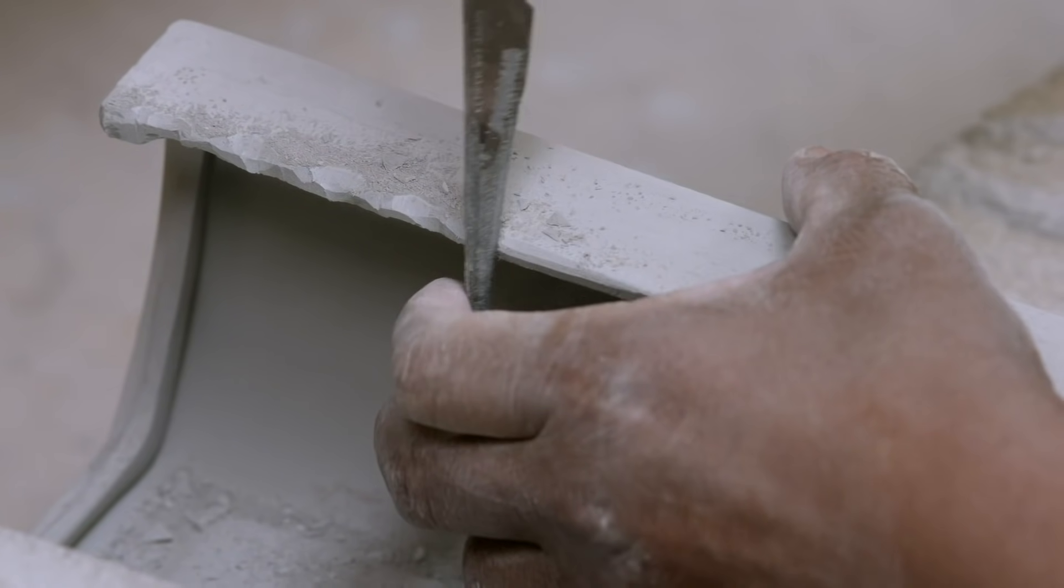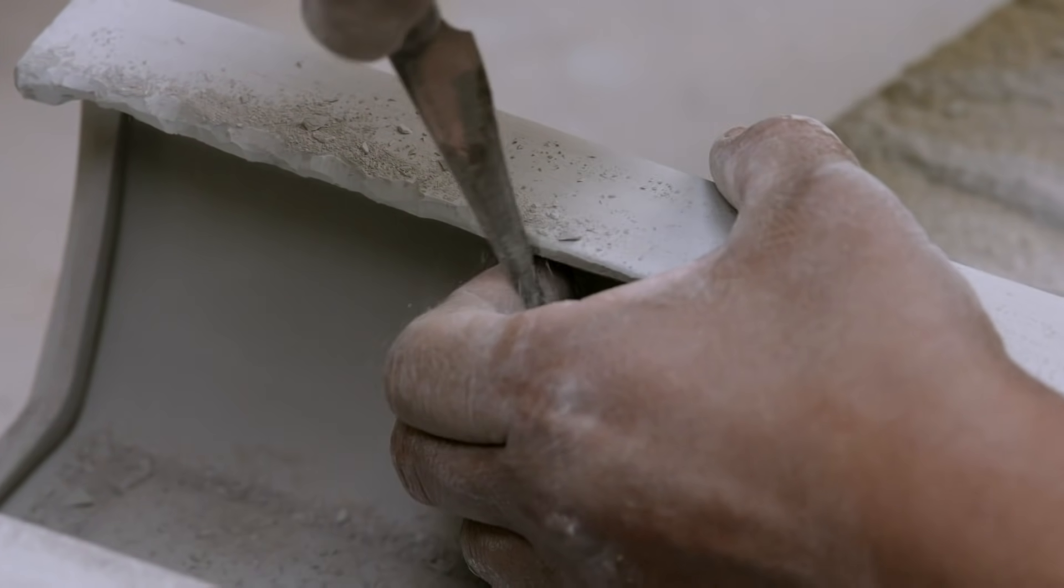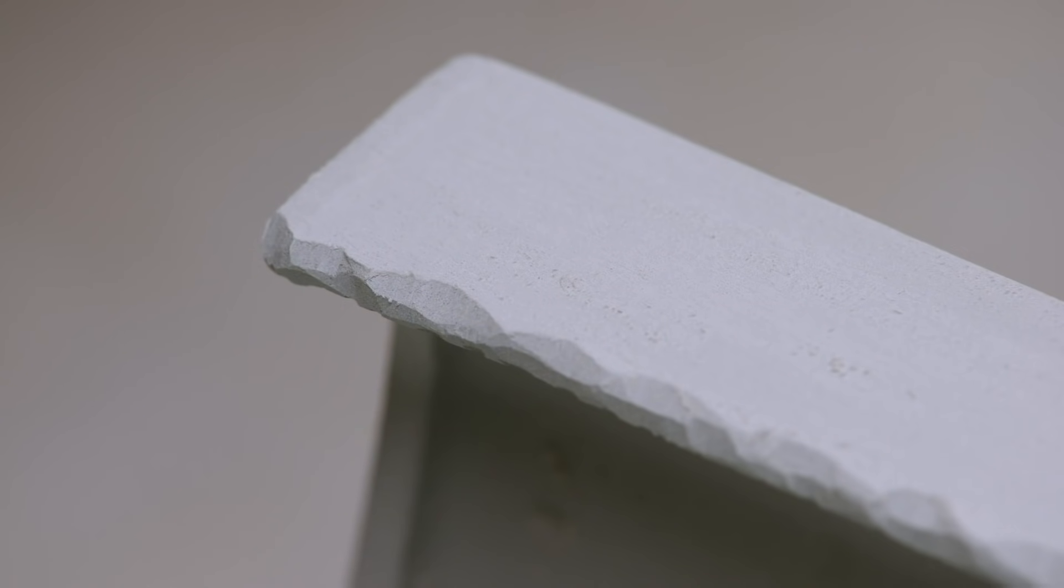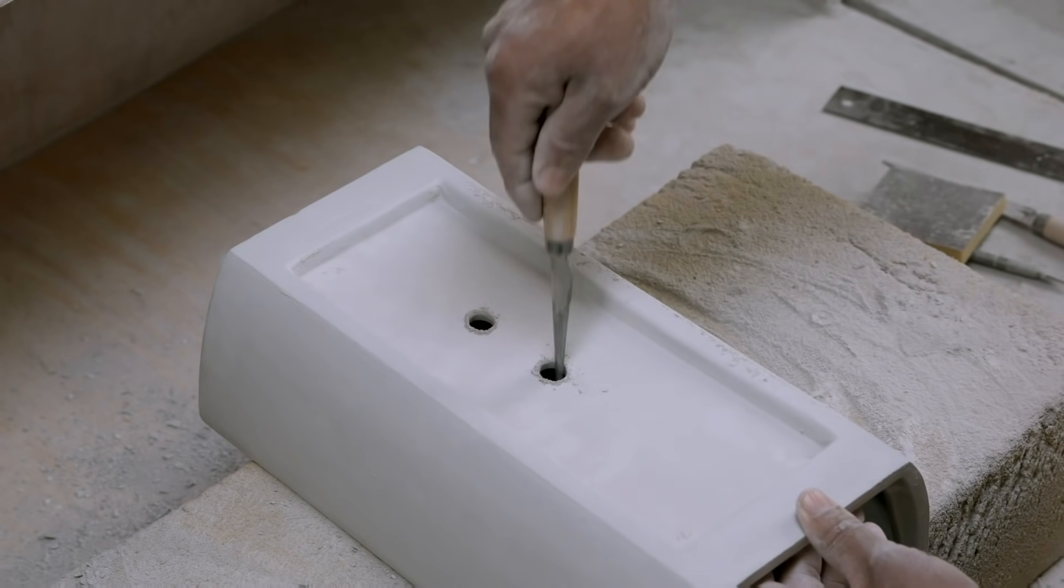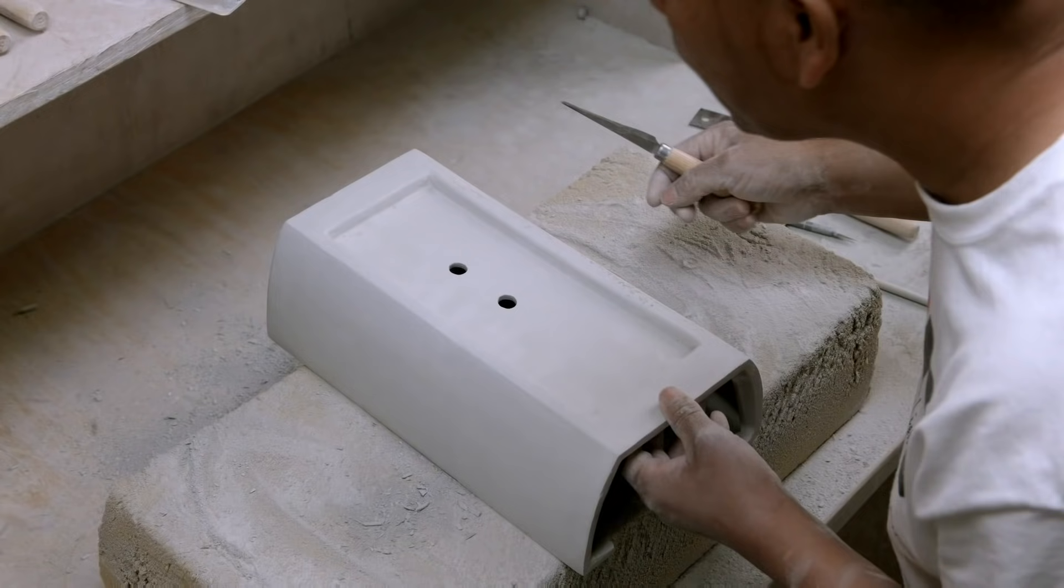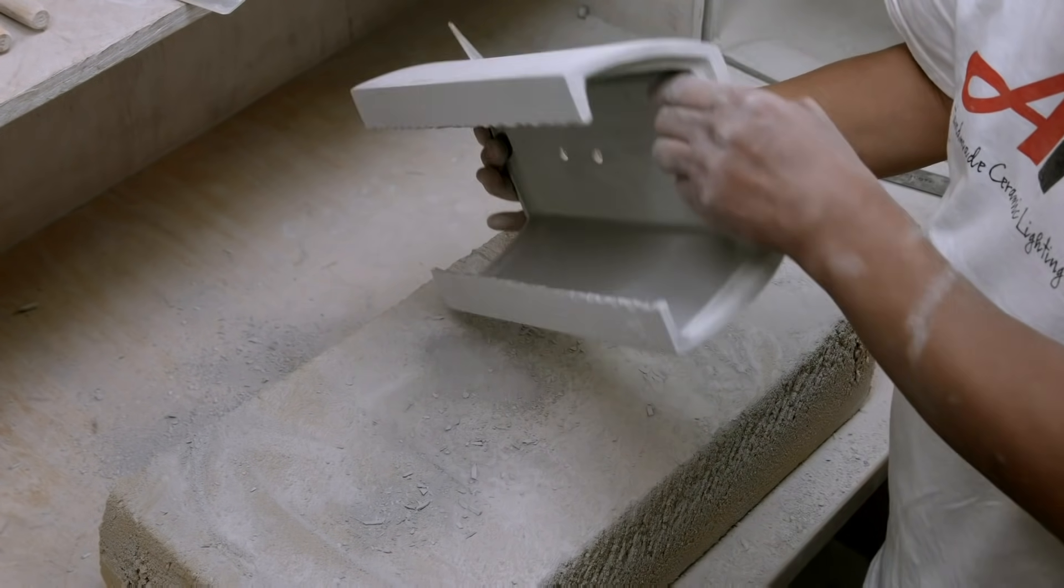Next, a profile is chiseled along the edges that will eventually frame the art glass pane. Holes are then cut into the rear, one for the light socket and the other to mount the fixture to an electrical junction box.